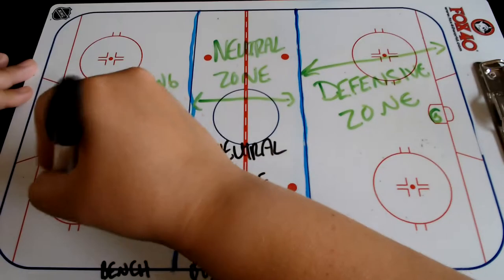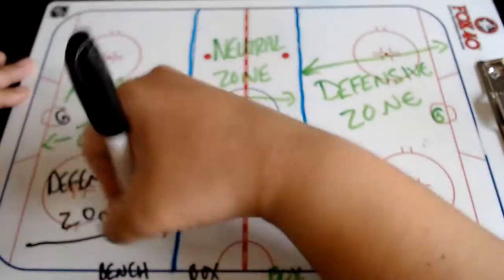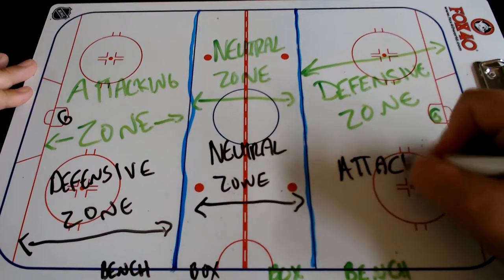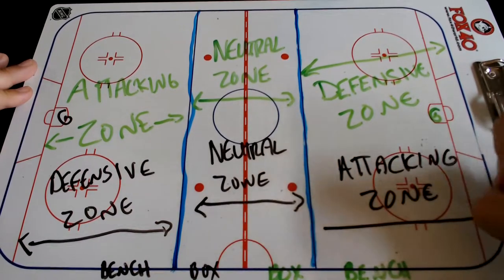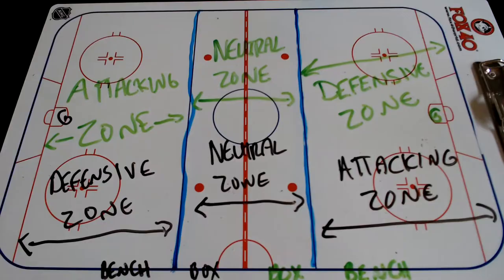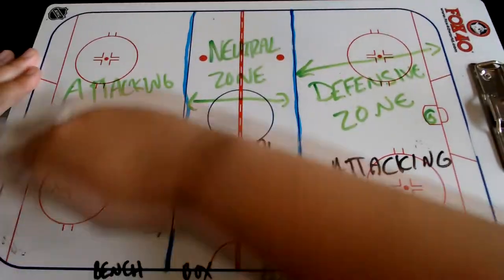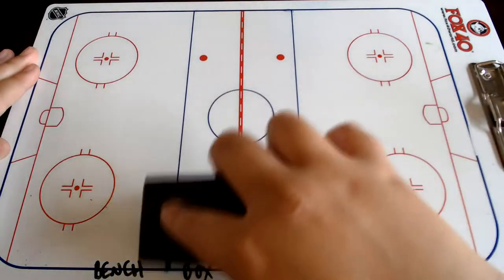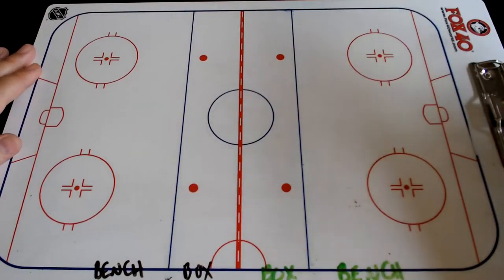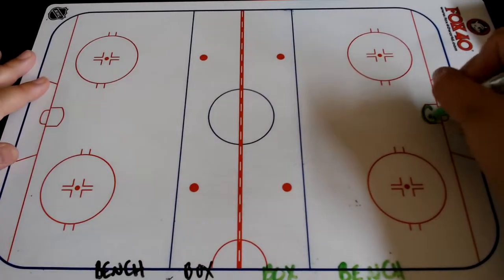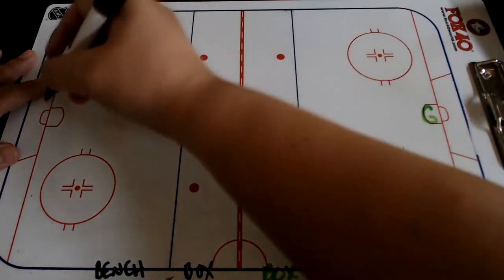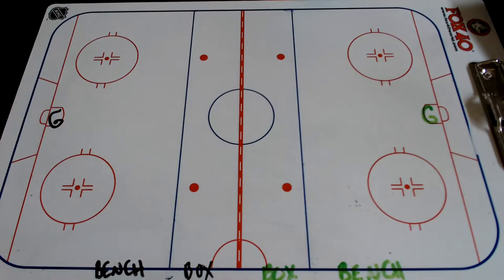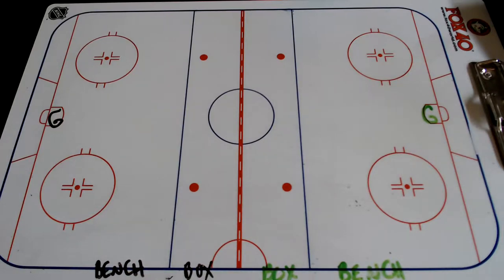For the black team, this will be in reverse. From the blue line to the end of the ice where their goalie is standing is their defensive zone. The neutral zone stays the same. And the green team's defensive zone is the black team's attacking zone. Zones are pretty important to the game of hockey because so many things depend on them, including a breakout and a forecheck, but also the basic rules require zones.